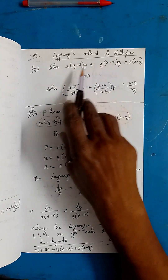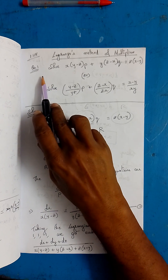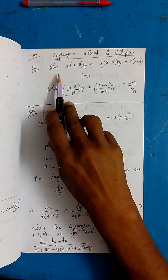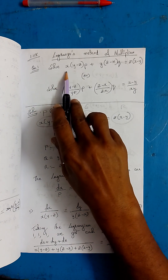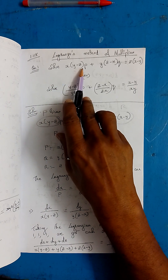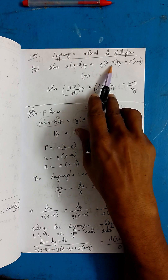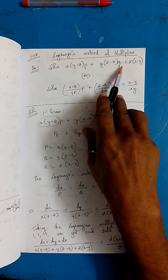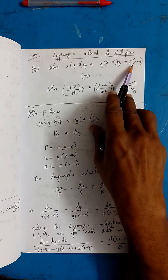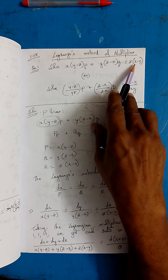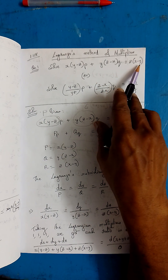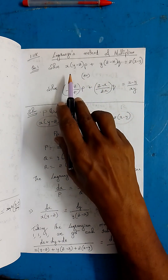Lagrange's method of multipliers. Question 1: Solve x(y−z)p + y(z−x)q = z(x−y).